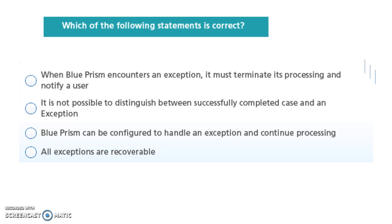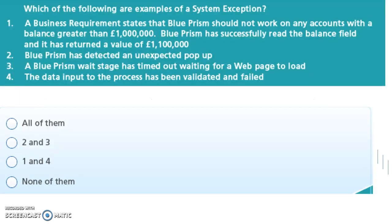So we can go to the next question: which one is a system exception? Here you can see — the first one, business requirements, comes under business exceptions. Data input to the process validated for Tony's comes under business exception. Blue Prism has detected an unexpected pop-up — that is a system exception. Blue Prism Wait stage has timed out waiting for a web page to load — that is a system exception. Two and three are both system exceptions; one and four are both business exceptions.